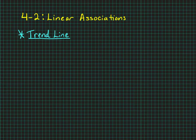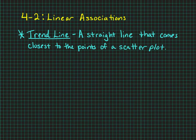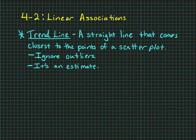We can also use what's called a trend line. It's a straight line that comes closest to the points of a scatter plot. A trend line will ignore any outliers. It's also just an estimate.